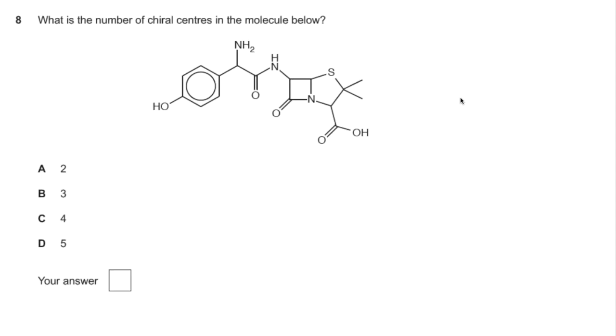Number eight. A chiral centre is a carbon atom with four different atoms or groups of atoms bonded, and in skeletal formula, don't forget about the hydrogen that's not shown. So if we just look through the molecule now, we've got a chiral centre there, we've got one there, another one there, and that one there. So the answer was four, so the answer is C.